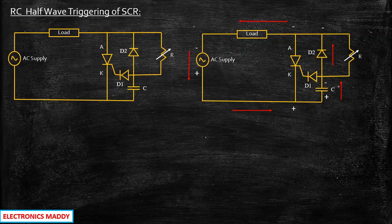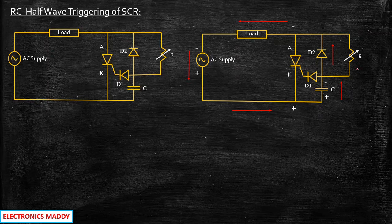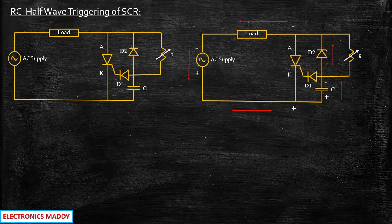You might ask why current only flows through D2 and not through resistor R. It will definitely flow through both, but most of the current passes through D2 while a minority flows through the resistor. Remember the fundamental principle: current always chooses the least resistance path. The least resistance path is the diode, because it acts as a short circuit when forward biased, whereas resistors always have some opposition.